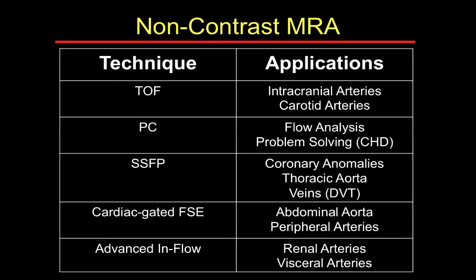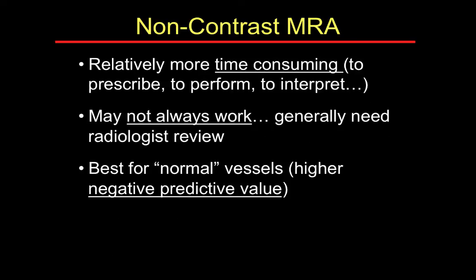To summarize the non-contrast applications: time-of-flight is ideal for intracranial and carotid artery visualization; phase contrast is used for flow analysis and problem solving, especially in congenital heart disease; SSFP is a fast acquisition for localization of arterial or venous structures, coronary arteries, thoracic aorta, and suspected DVT; cardiac-gated fast spin echo is helpful for abdominal aorta and peripheral arteries; and advanced inflow imaging is helpful for renal and visceral arteries. Non-contrast MRA techniques are generally more time-consuming, may not work in all cases, and perform best with normal vessels and flow patterns, offering a high negative predictive value.